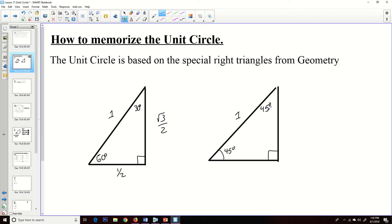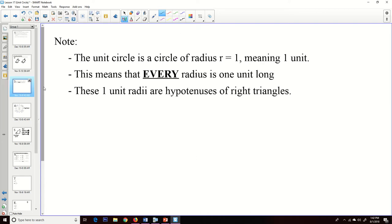In a 45, 45, 90 right triangle, because this is an isosceles triangle, these two values are the same, and with a hypotenuse of 1, you get square root of 2 over 2, and square root of 2 over 2 as those two values. Now all of these values are basically the numbers that we're going to be using on the unit circle.